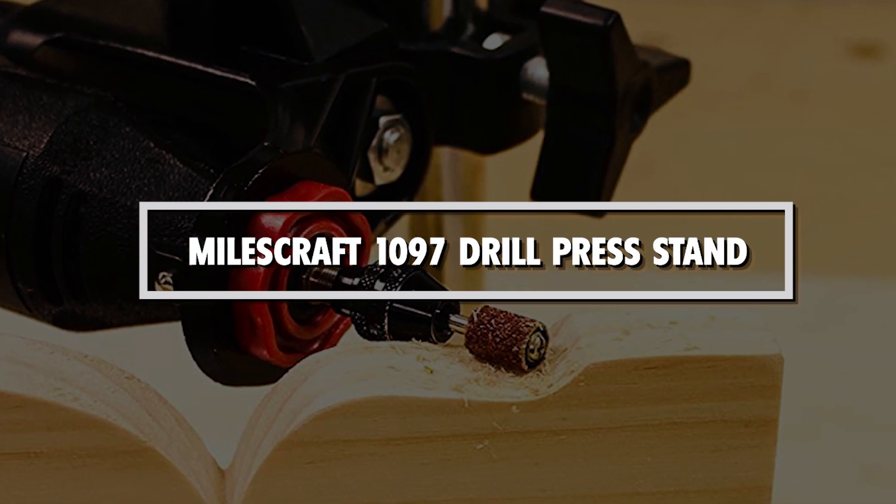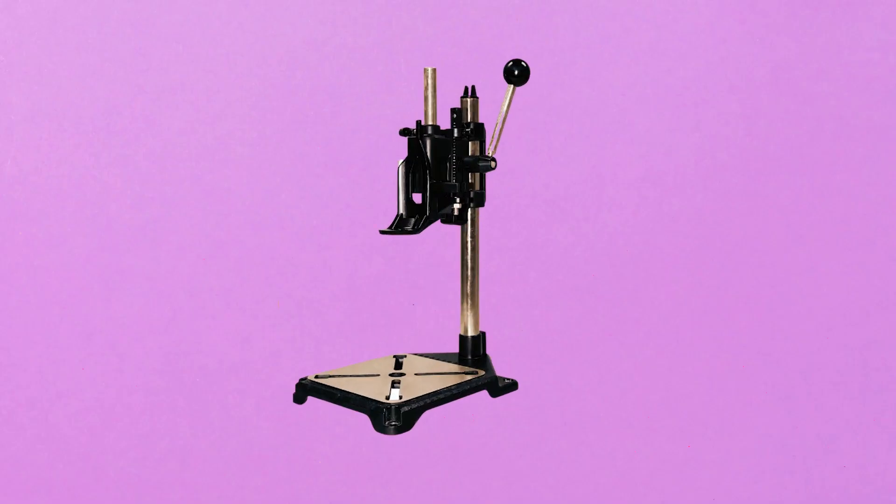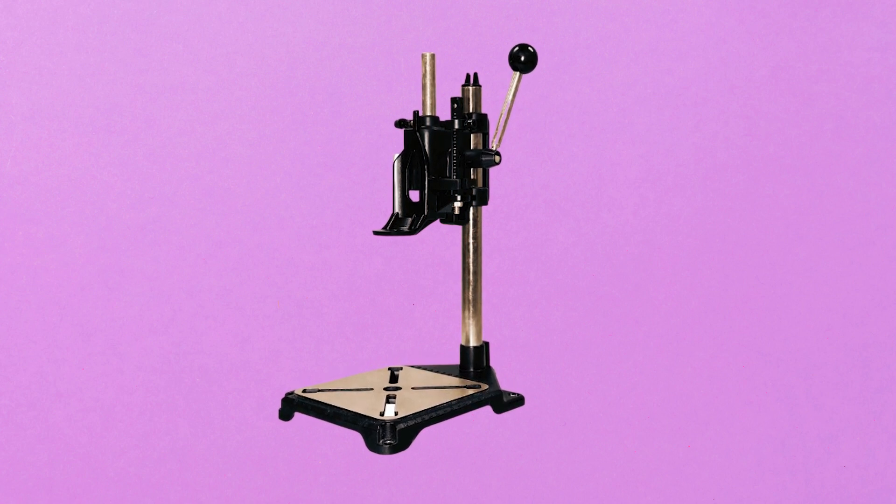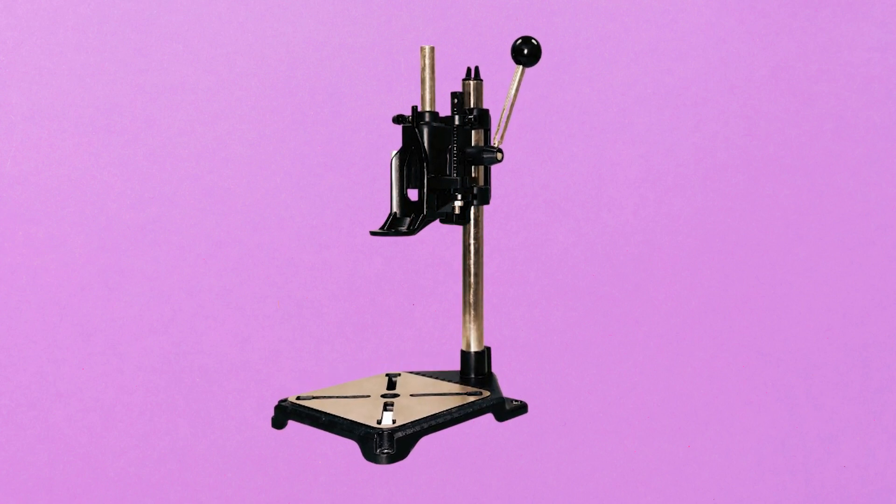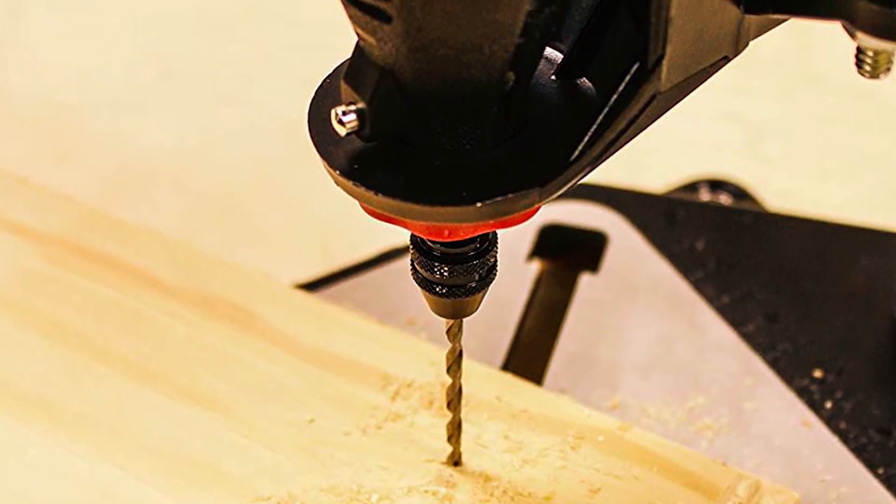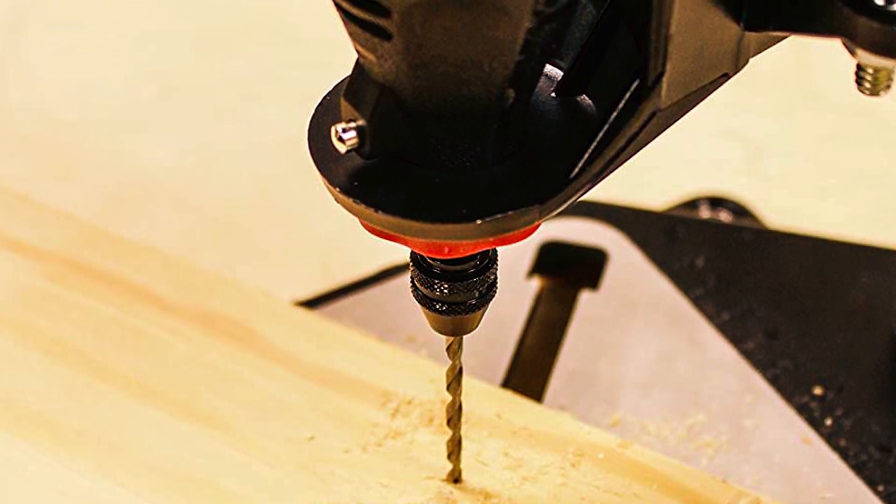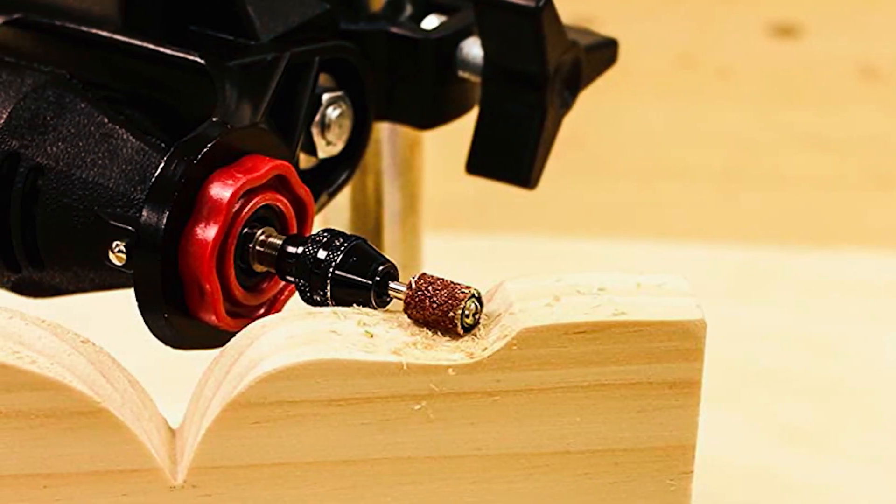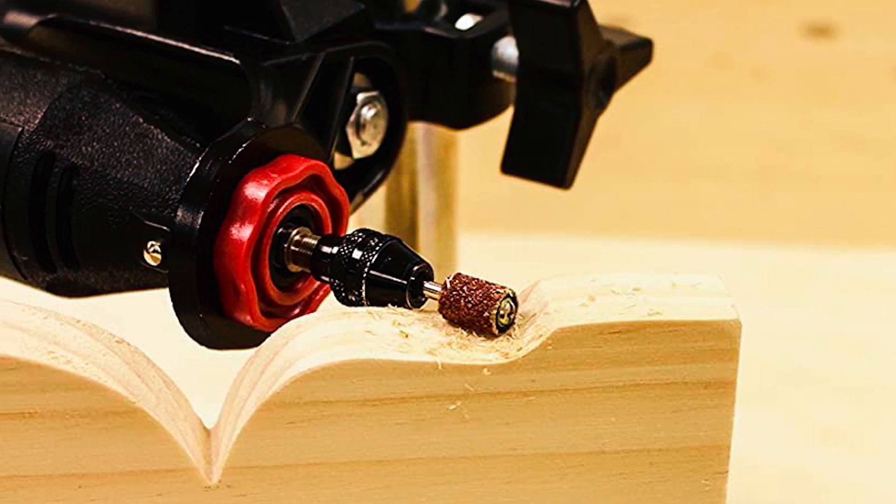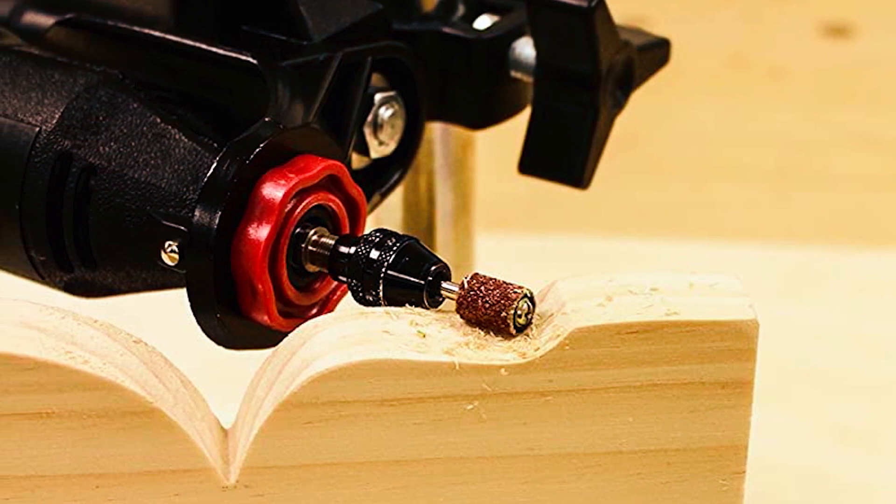Miloscraft 1097 Drill Press Stand. The Miloscraft 1097 Tool Stand is a versatile and durable drill press stand that is specifically designed for use with Dremel-style rotary tools. With a sturdy metal head, this stand provides a solid and secure base for all your drilling needs. The spring-loaded metal rack and pinion gearing ensure smooth and controlled drilling, making it easy to get the precise results you're looking for.